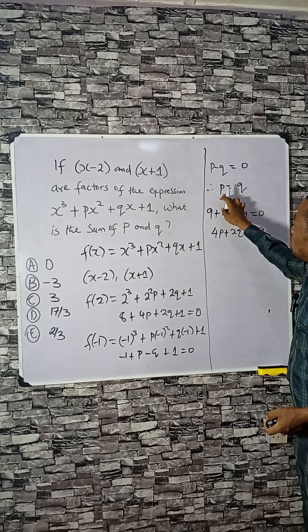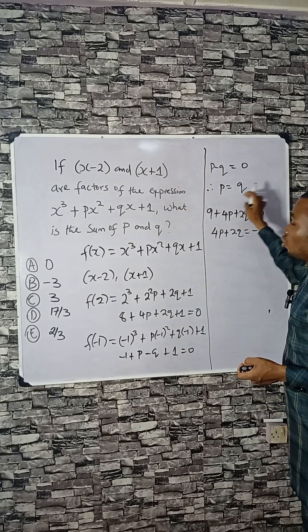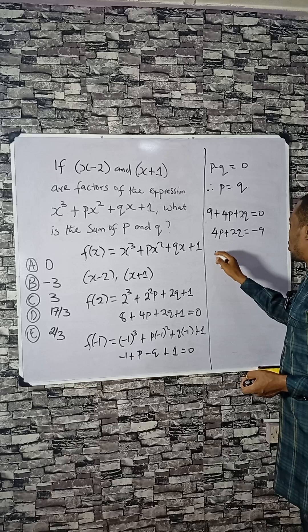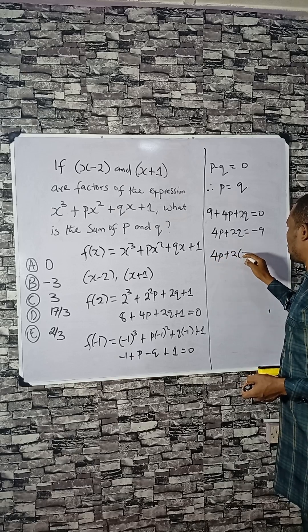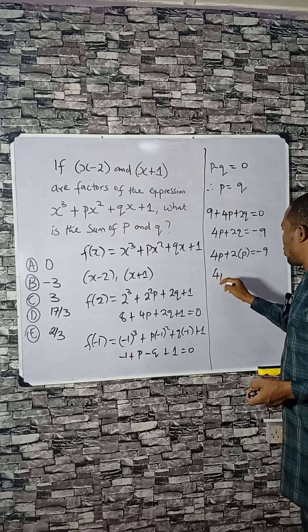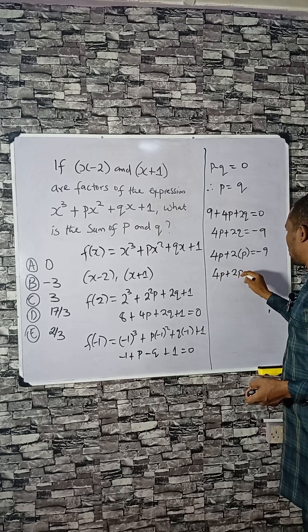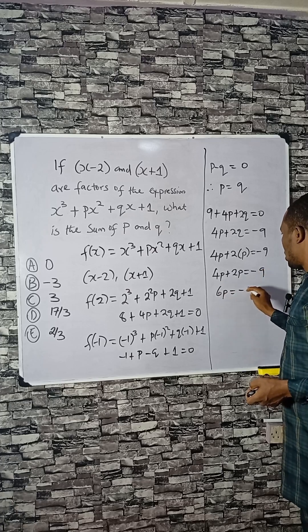Since p equals q, we can substitute p for q. So I have 4p plus 2p equals minus 9. This is 6p equals minus 9.